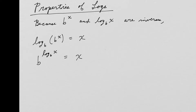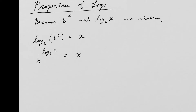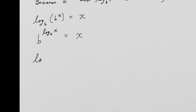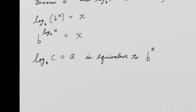The other important property of logs is that log base b of c equals a is equivalent to b raised to the a equals c. Think of this as the logarithmic form and the exponential form of the same thing — they're exactly equal to one another.